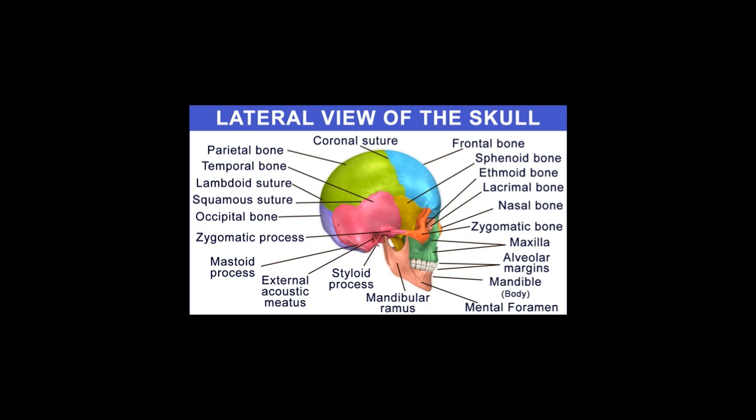The cruciate eminence divides the internal surface into four concavities. The internal occipital protuberance lies at the point of intersection of the four divisions. The upper and lower divisions are triangular and quadrilateral in shape respectively. The upper two divisions accommodate the occipital lobes of the cerebrum, whereas the lower two divisions accommodate the cerebellar hemispheres.